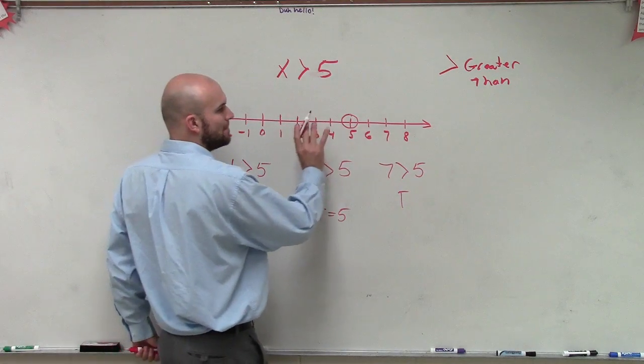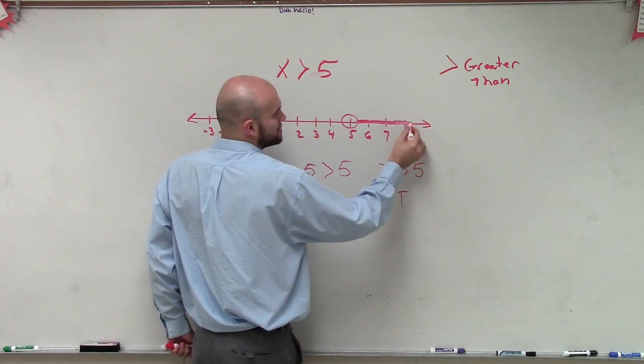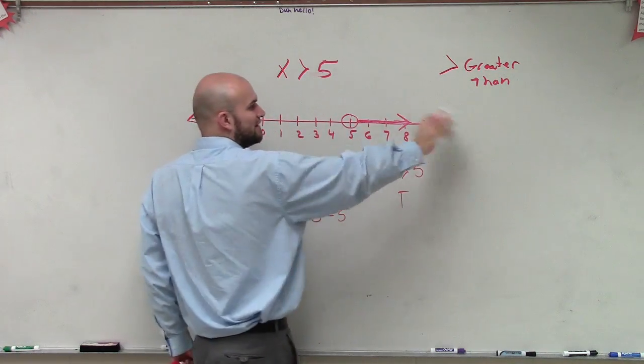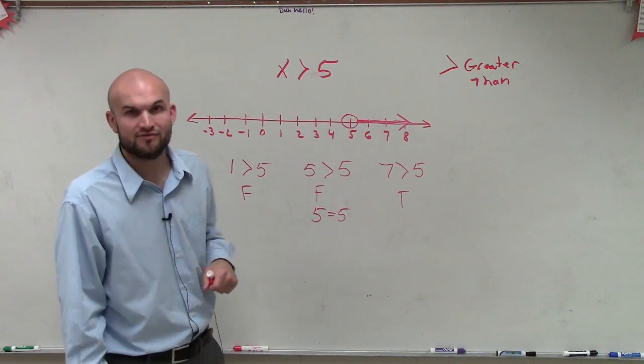However, all the numbers to the right going on to infinity do make this problem true. So therefore, we will graph with a line that's going to go to infinity, for all numbers in that direction are always going to be greater than 5.